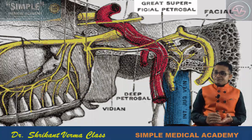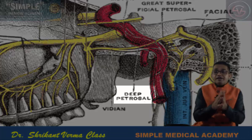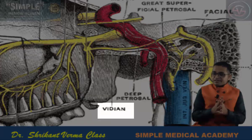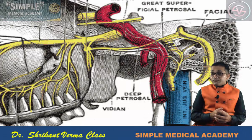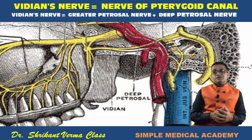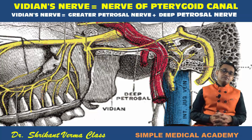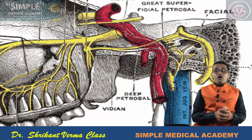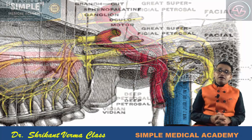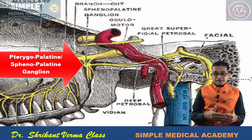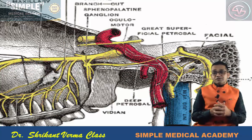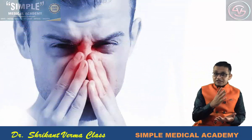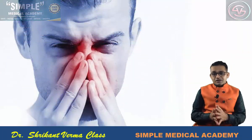Within the pterygoid canal, the greater petrosal nerve and the deep petrosal nerve unite to form the Vidian nerve. This Vidian nerve is also known as the nerve of the pterygoid canal — an important MCQ always asked. The pterygoid canal ganglion, also known as the ganglion of hay fever or ganglion of allergy, participates in the allergy response. The Vidian nerve participates in allergy, correlating with ENT conditions such as vasomotor rhinitis and allergic rhinitis.